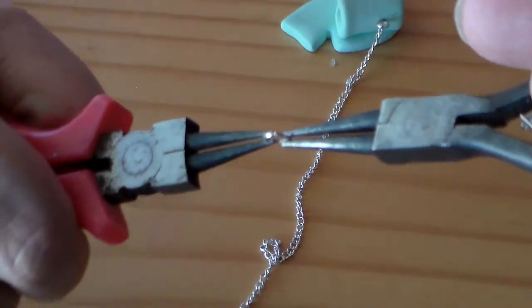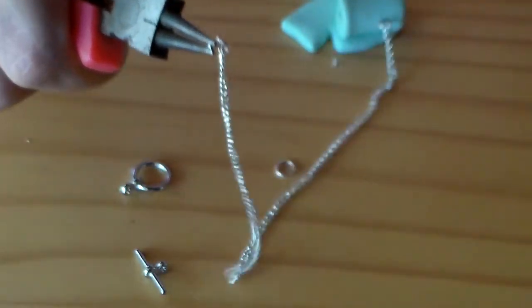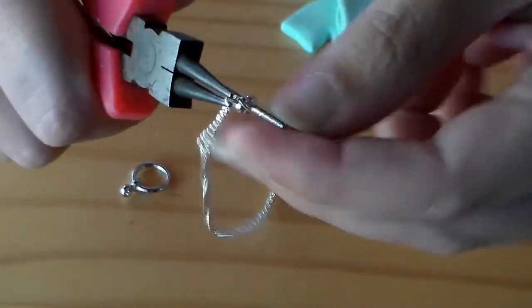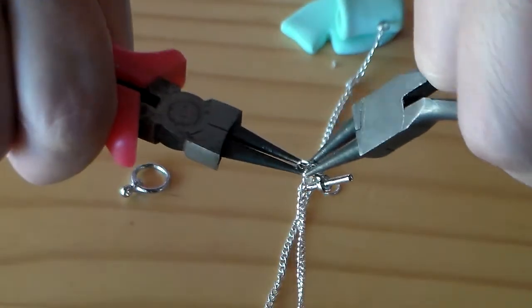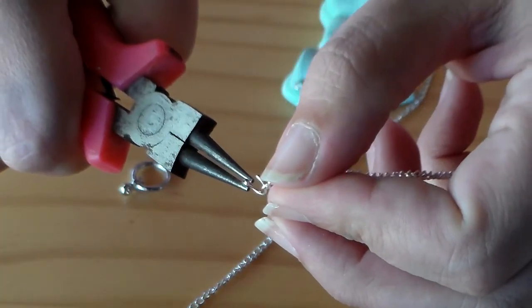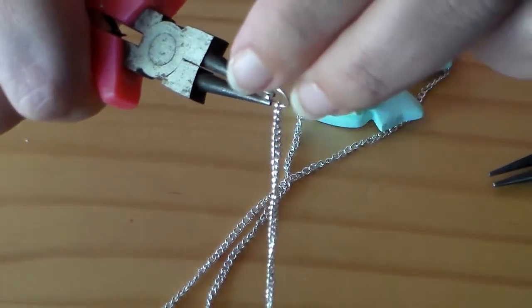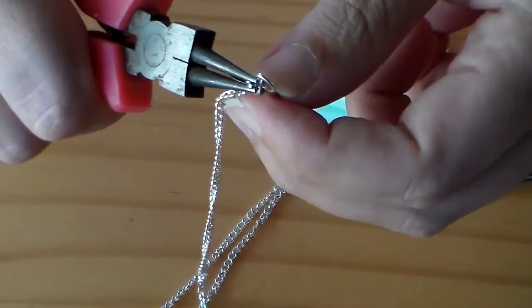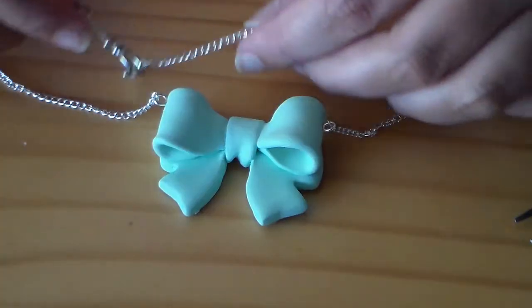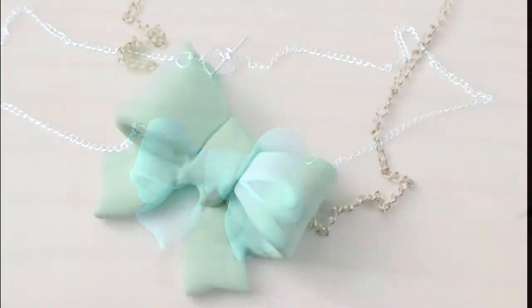So I'm going to take my jump rings and I'm going to attach a toggle. If you want it to be adjustable, attach a lobster claw and make sure you use chain that has links large enough to where you can work the lobster claw into so that it will be adjustable. But I'm using a toggle just because I know where I want mine to sit. And I had the toggle laying around so that's what I used. Now that we've got the toggle attached, we are finished with our bow necklace.